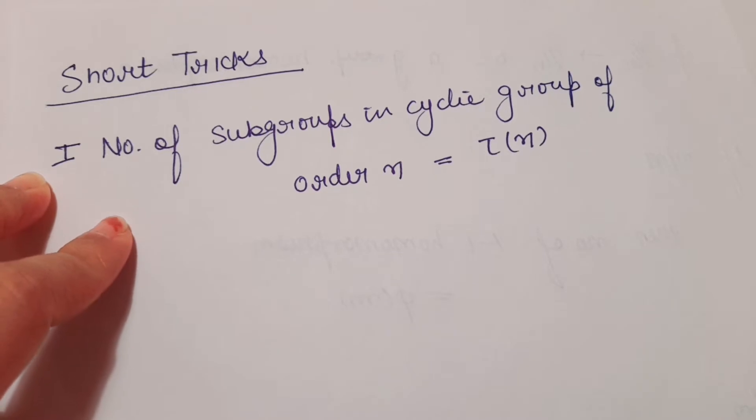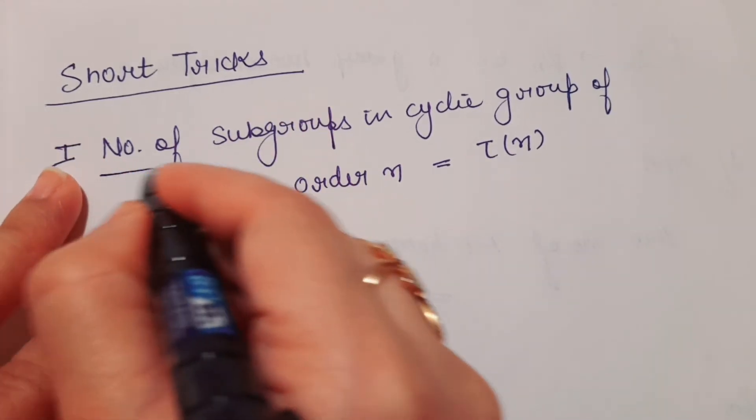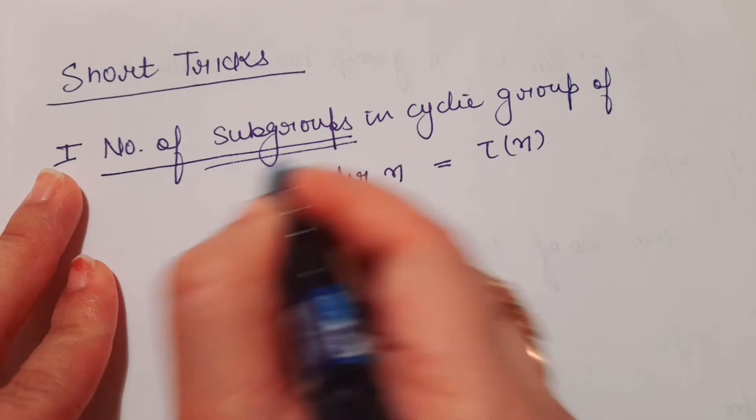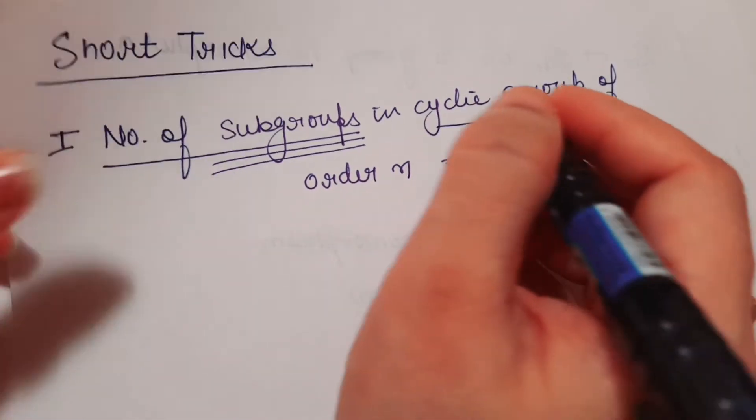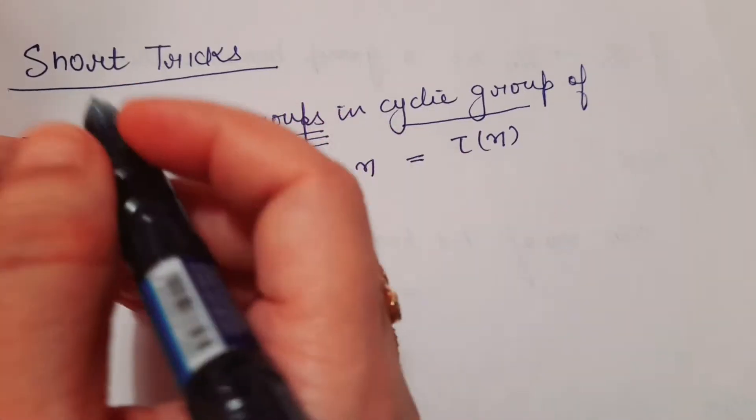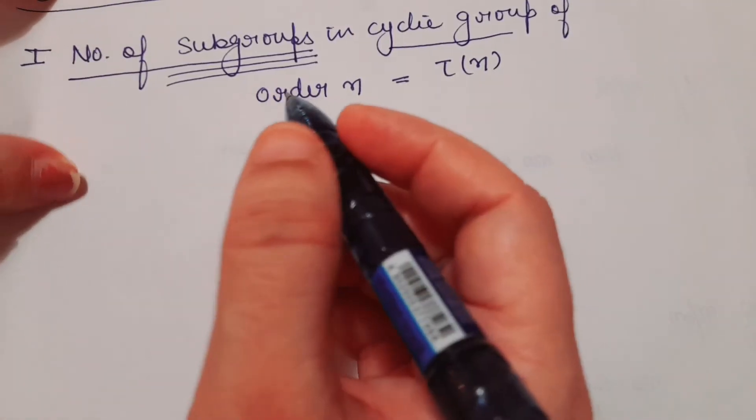This is the first shortcut trick: the number of subgroups in a cyclic group of order n is τ(n). If you need to calculate the number of subgroups and you know the group is cyclic, you can use this. You can check with many shortcuts whether a group is cyclic or not, but I will not discuss that in this video.